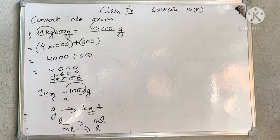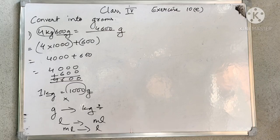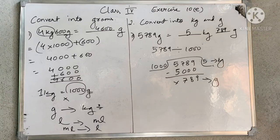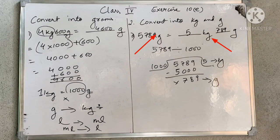So in this manner you have to solve this question. Next question is converting into kilograms and grams. It is similar to conversion of kilometres into kilometres and metres. Here you need to convert into kilograms and grams. As you can see, you are converting the smaller unit — you are converting grams into kilograms and grams.